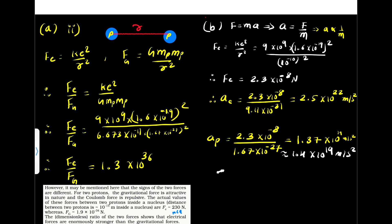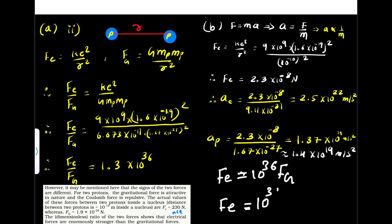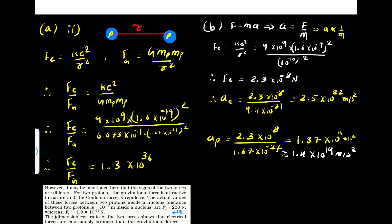From these two observations, the electrostatic force is nearly 10³⁶ times the gravitational force between two protons, and the electrostatic force between an electron and a proton is 10³⁹ times the gravitational force. Overall, the electrostatic force is nearly 10³⁶ to 10³⁸ times stronger than the gravitational force.